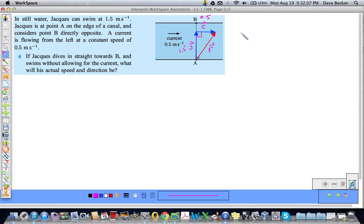I can say that the magnitude of S squared plus the magnitude of C squared must be equal to the magnitude of R squared. And therefore, I know that the magnitude of S is 1.5. So 1.5 squared plus the magnitude of C is 0.5 squared. If I take the square root of that, I get the magnitude of R. And if I crank that into my calculator, I get R approximately equal to 1.58. So that means that Jacques's actual speed is 1.58 meters per second.